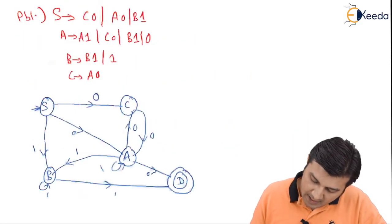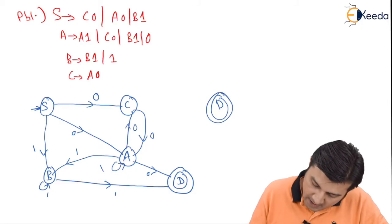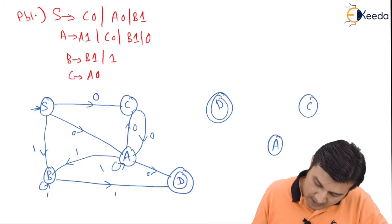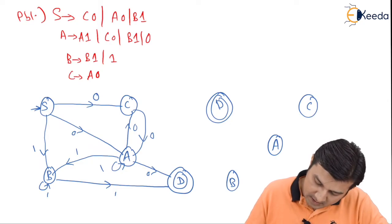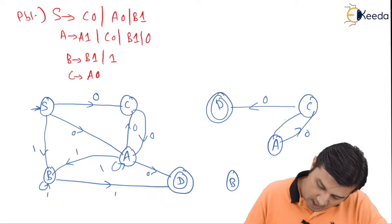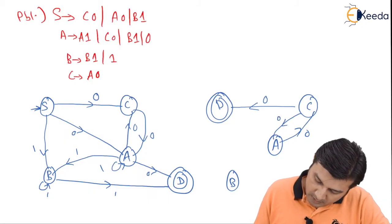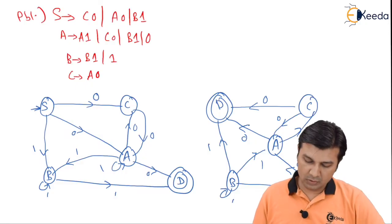After interchanging, I get S and D swapped, with C, A, and B remaining in the same place. Reversing the arrows: A to C transitions become 0 up and 0 down, and then there is an S transition with 0, transitions with 1 going in both directions, transitions with 1 going up, and the last one going over with 0. That completes my diagram.